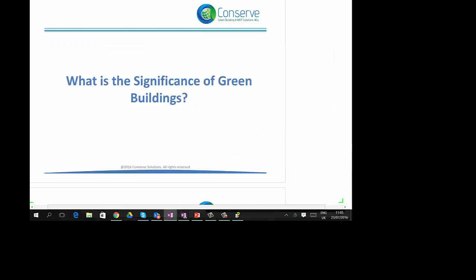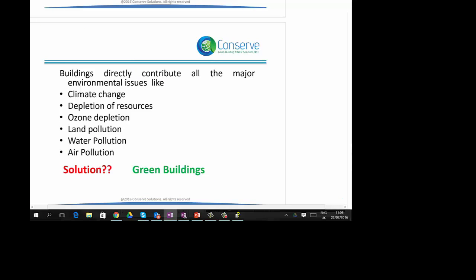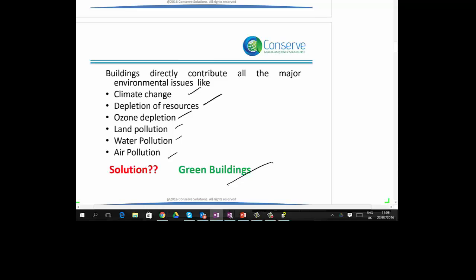Now what is the significance of green buildings? Buildings directly contribute to all major environmental issues like climate change, global warming, depletion of resources, ozone depletion, land pollution, water pollution, air pollution, and so on. The closest possible solution for these environmental impacts is to go for green buildings. Hence, because of the significance of green buildings, they are a part of building regulation in many countries.